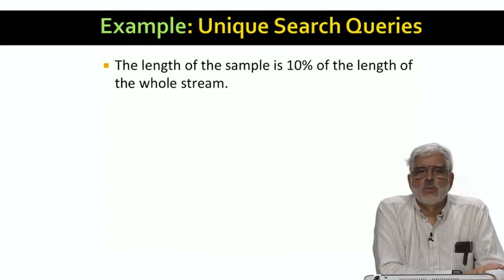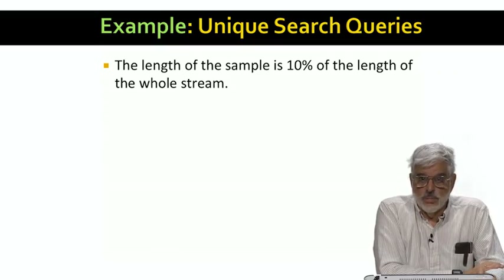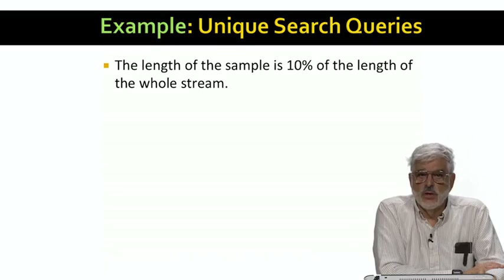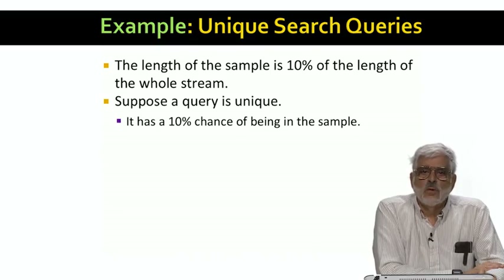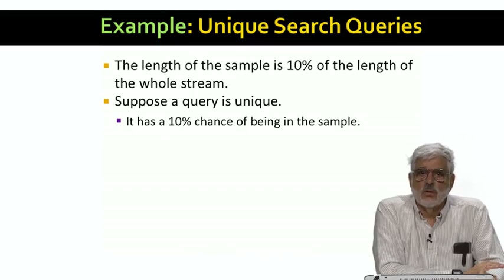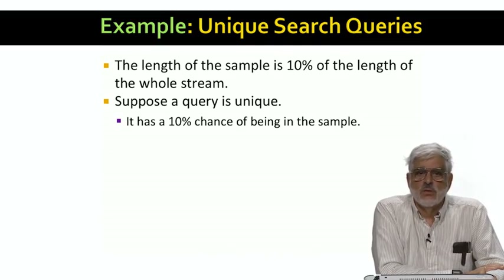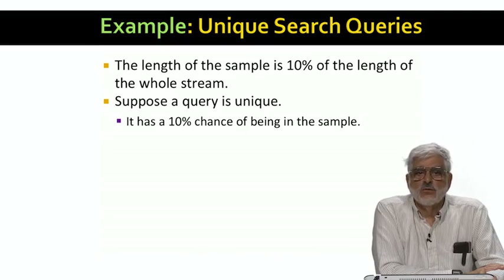Let's do the math for the matter of unique queries. First, we know that there will be, in the sample, very close to 10% of the query occurrences of the original stream. The problem is that the probability of a given query appearing to be unique in the sample gets distorted. First, suppose the query is unique in the stream as a whole. It has a one-tenth chance of being selected for the sample. That says the fraction of truly unique queries that make it into the sample is the same as for the whole stream. If we could only count the truly unique queries in the sample, we would get the right answer.